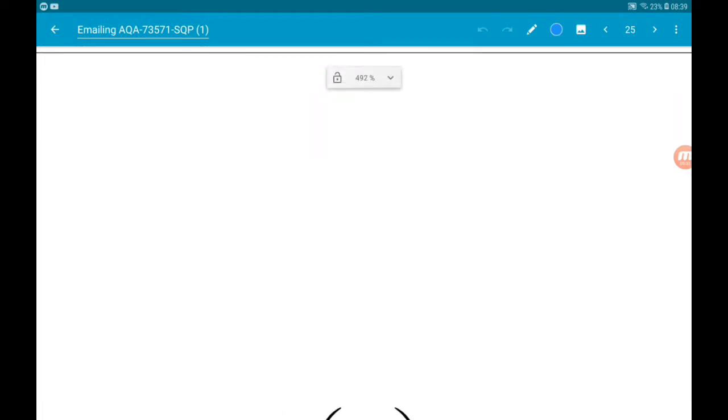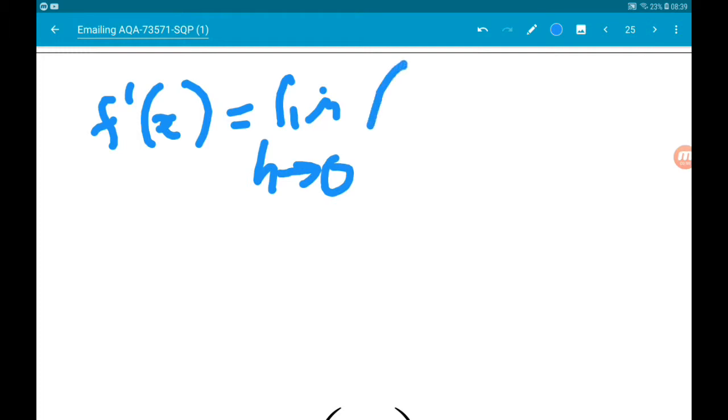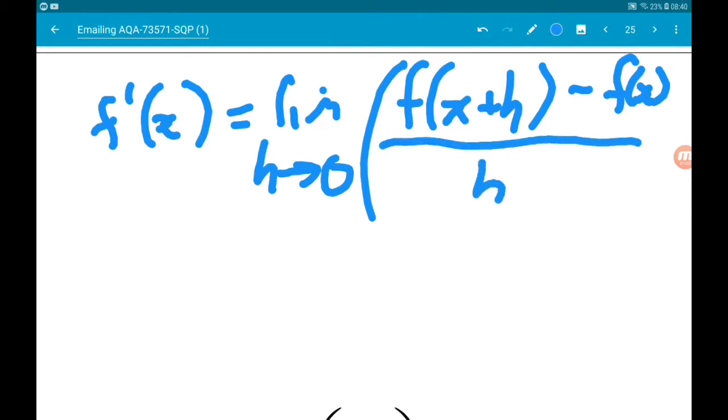We need the differentiation by first principles formula. So f dash is the limit as h tends to zero of f of x plus h minus f of x, all over h.